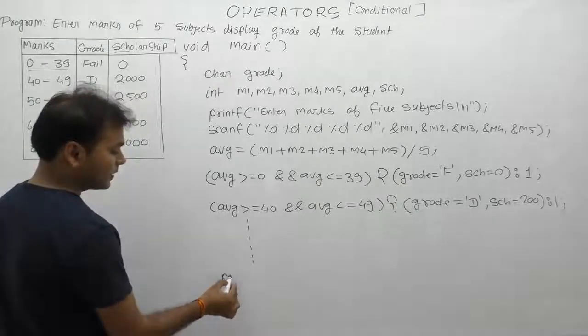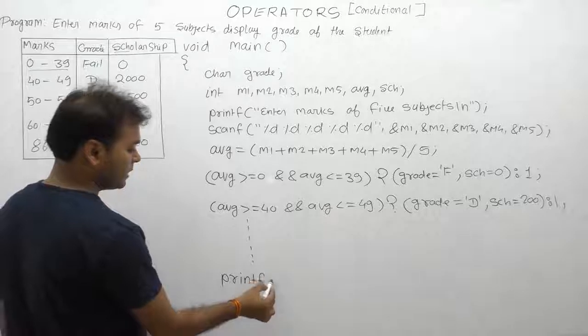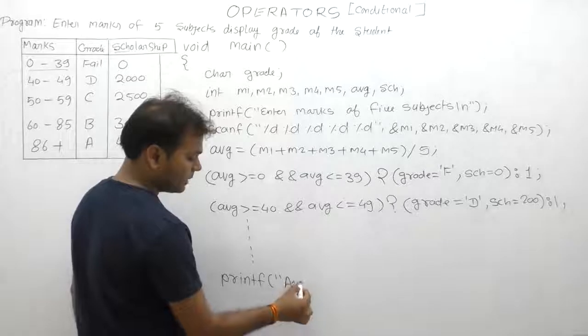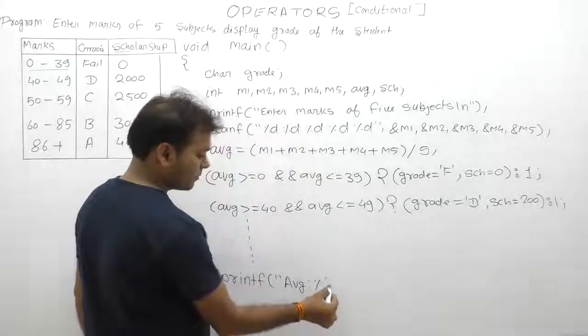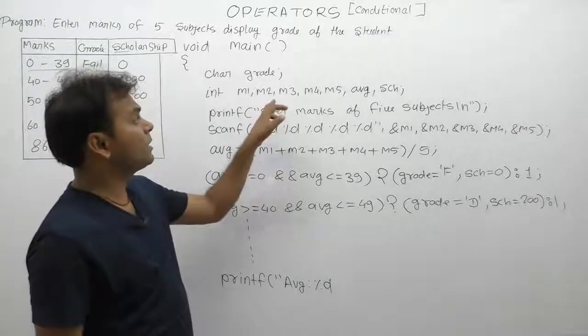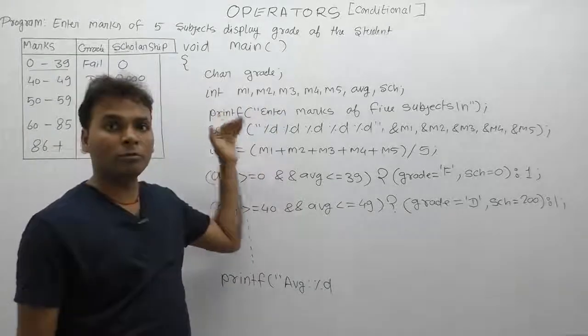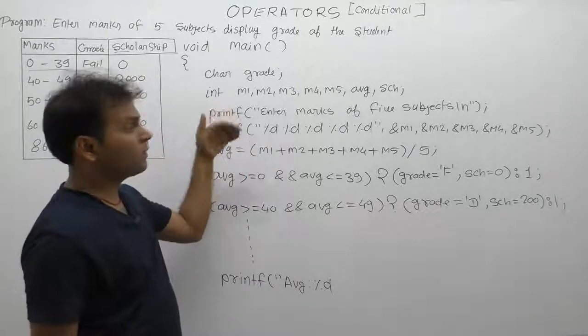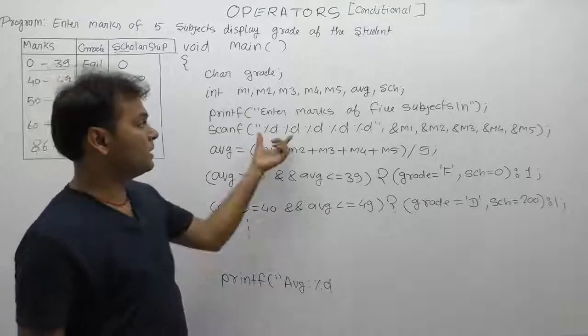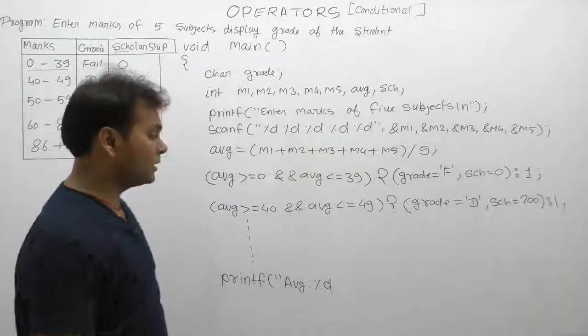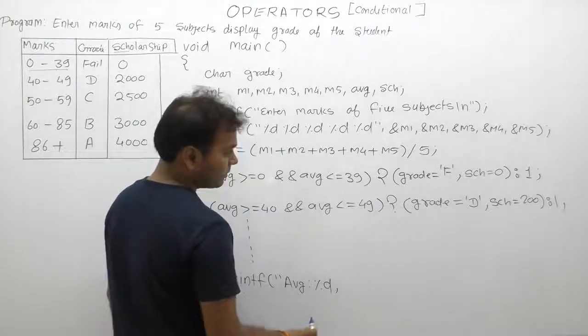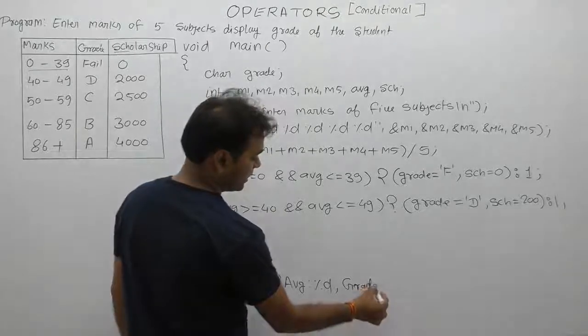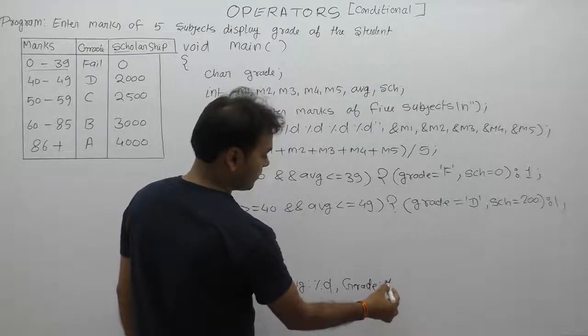Now in the display process, we simply print the value of average marks. Average marks means simply avg. We use appropriate format specifier. For calculating average of marks, the variable's type can be either integer or float - you can take it as either. Then we display grade using percent c for character.